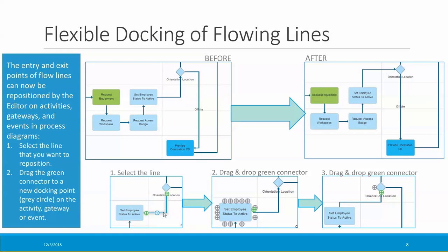In step two, I drag that green connector to a new docking port on the activity, which are the gray circles you can see in the lower middle screenshot. And in step three, I drag the green docking port on the gateway to the docking port on the other corner. I can do the same thing with the line coming out of the gateway, and I end up with the diagram on the upper right, which looks better and is easier to follow than the original. This is a great way to make small changes that add up to produce more readable diagrams.